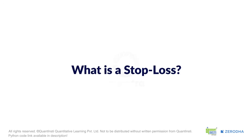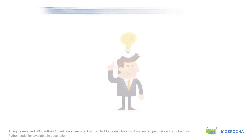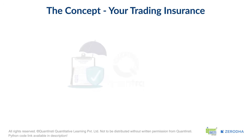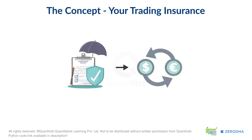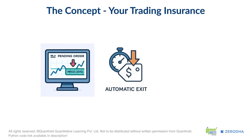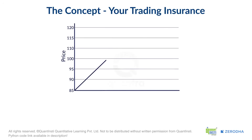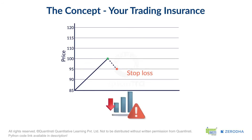Let's look at stop loss, one of the important pillars in the realm of risk management. What exactly is a stop loss? The easiest way to think about it is as an insurance policy for your trade. It's a pending order you place that automatically exits your position if the price moves against you to a certain level. Imagine you buy a stock at Rs. 100, hoping it will go to Rs. 110. But what if it goes down instead? You might decide: if this stock drops to Rs. 95, I want to sell and cut my losses. That Rs. 95 level is your stop loss. This prevents a small, manageable loss from turning into a catastrophic one.